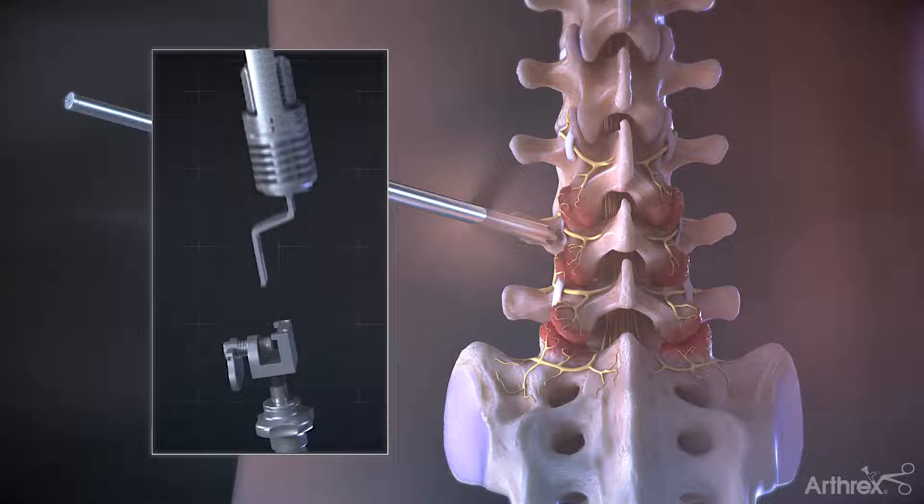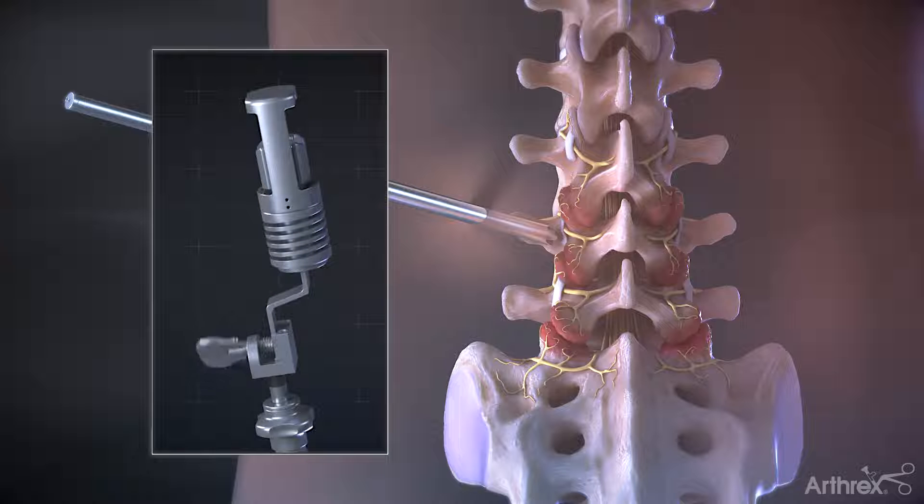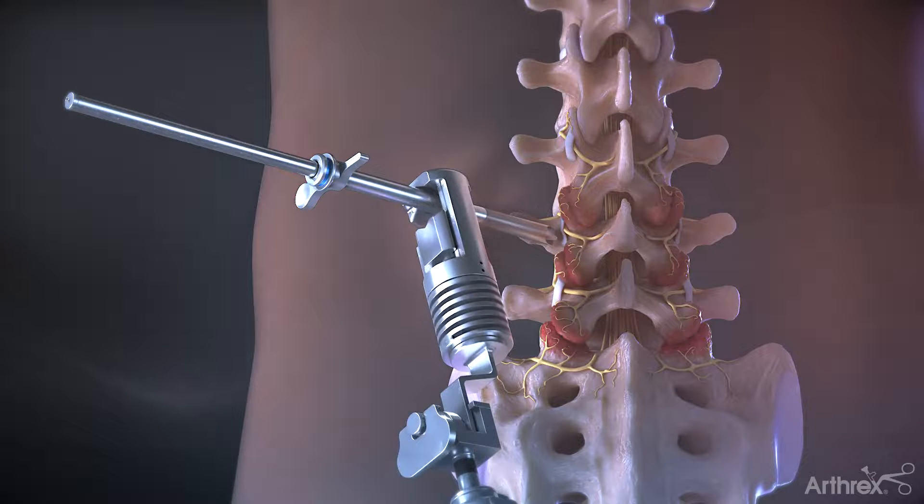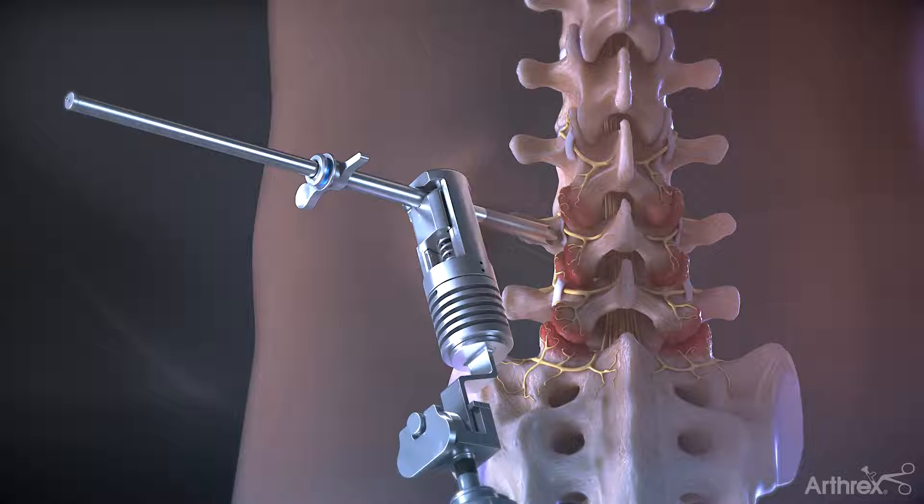Attach the cannula holder securely to the Tramano Arm Adapter. Connect the holder to the cannula to aid in maintaining the trajectory prior to removing the switching stick.